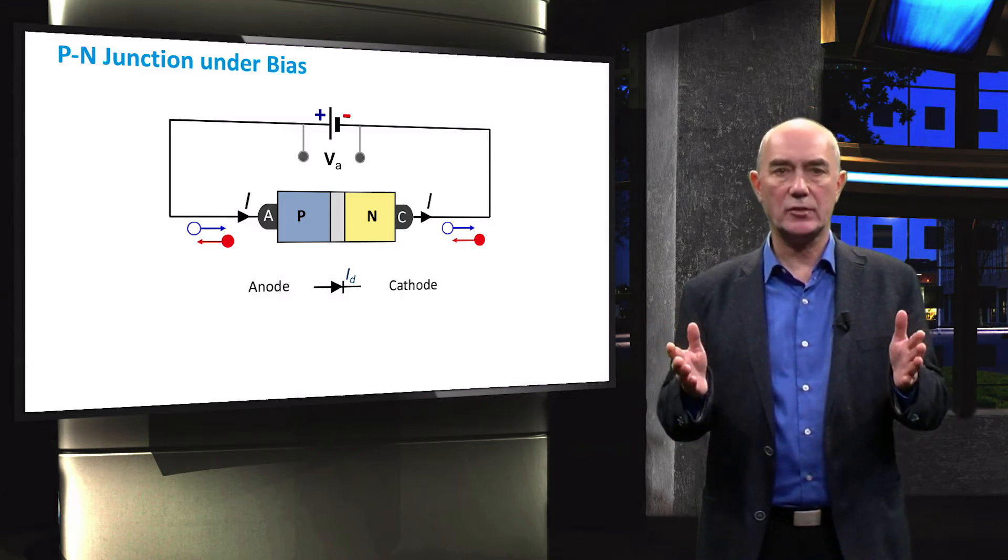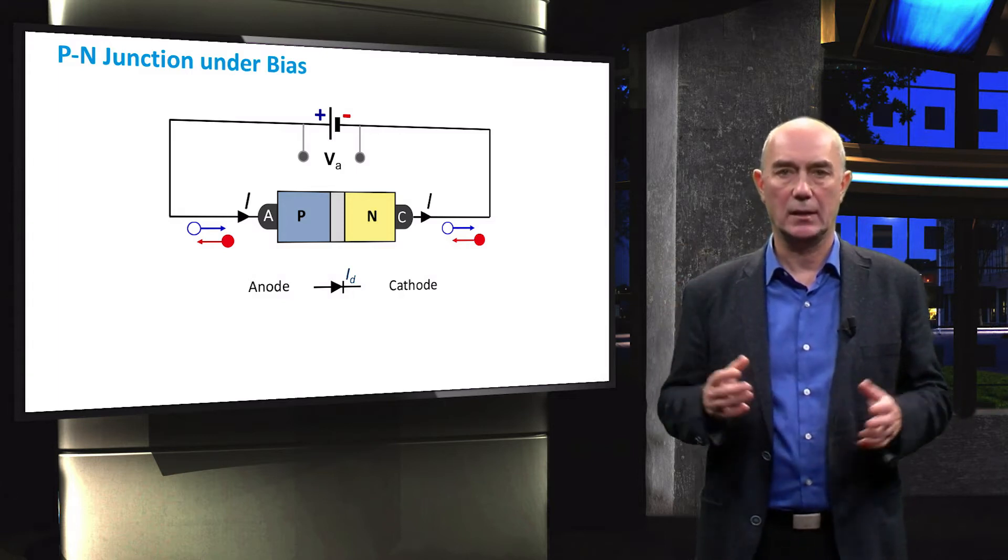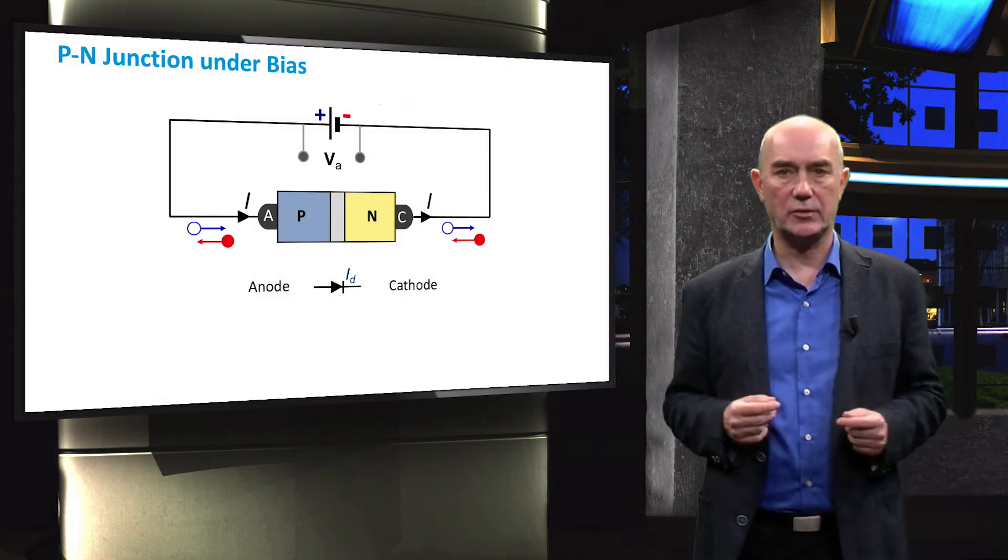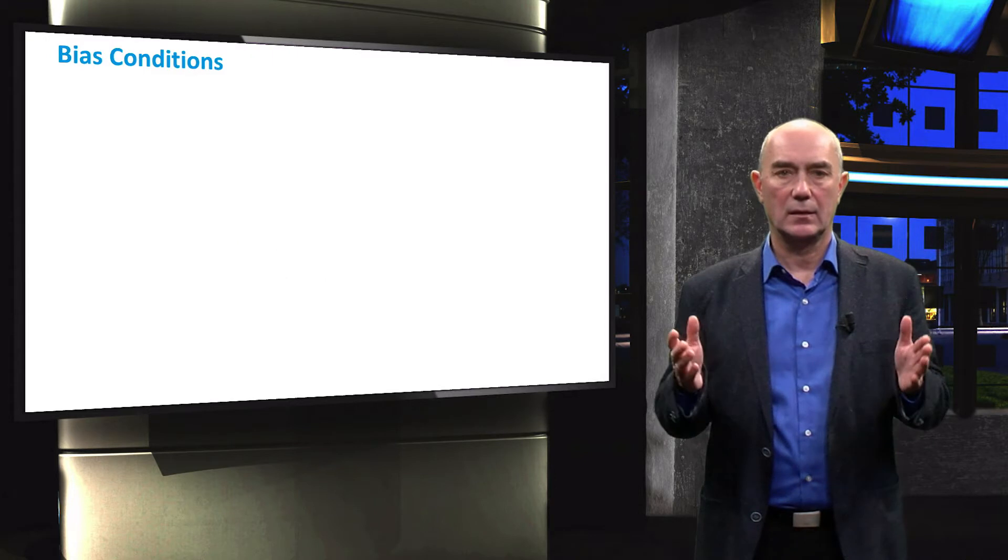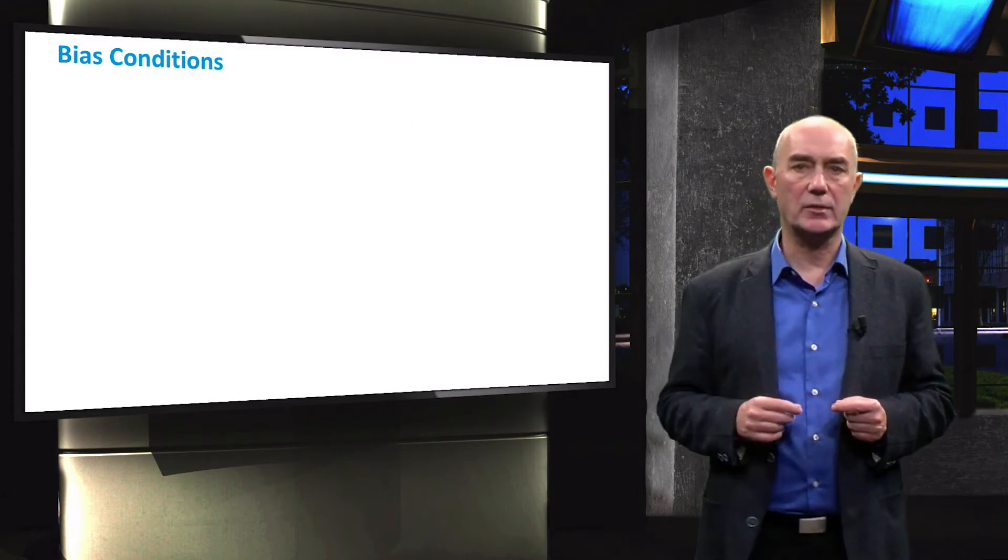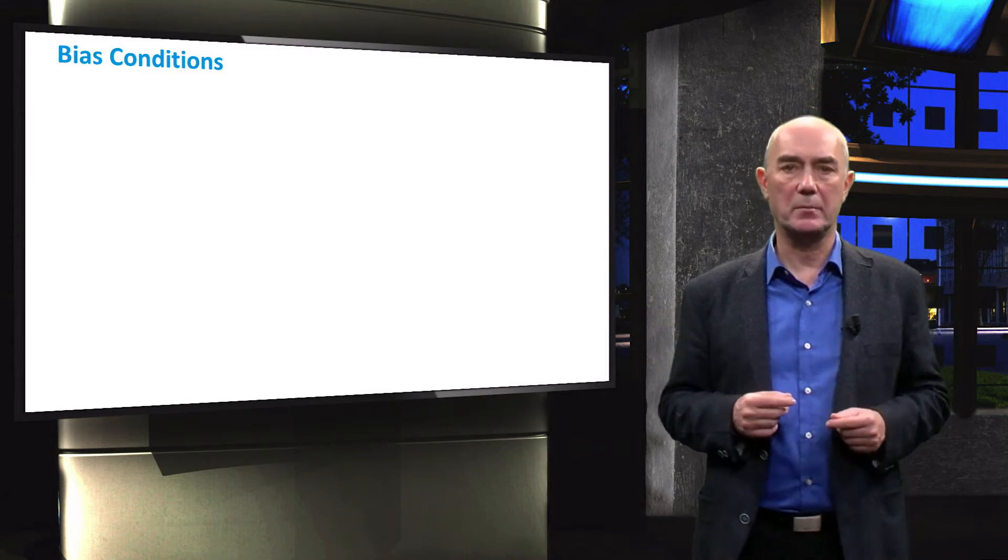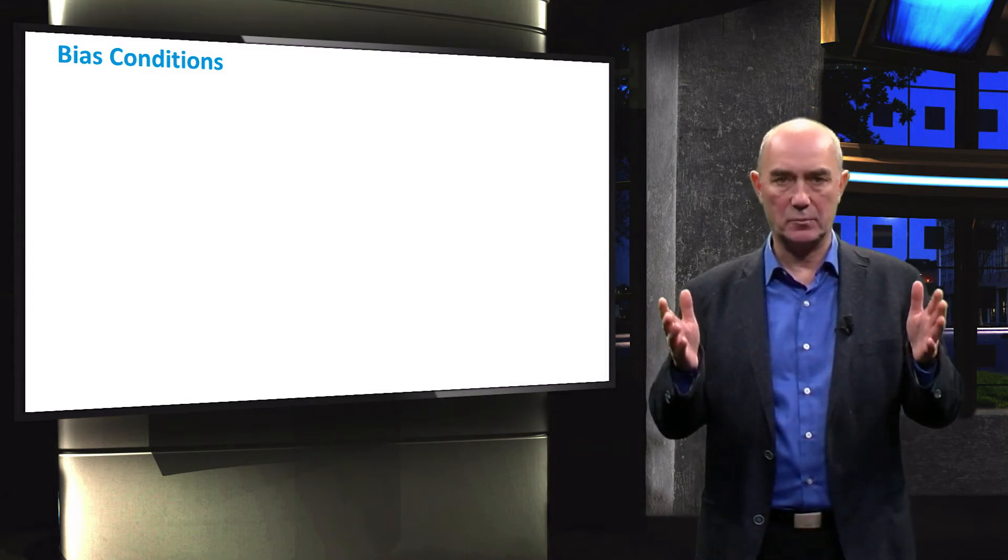This relationship of the PN junction diode is called the I-V relationship, and it is an important relationship for any electrical device. Before we show the equation and how to plot this relationship, let's quickly remember what happens conceptually in different voltage bias conditions.